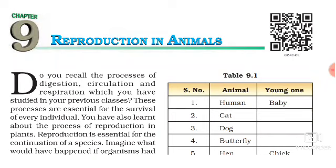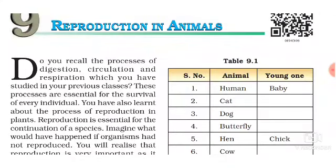In Hindi we can say 'prajnan'. Reproduction means when one or two parent cells go through the reproduction process, through the fertilization process. You have already studied about reproduction in plants in Class 7th. So without wasting time, let's get started. The process by which living beings give birth to young ones of their own kind, to maintain and continue their species, is called reproduction.